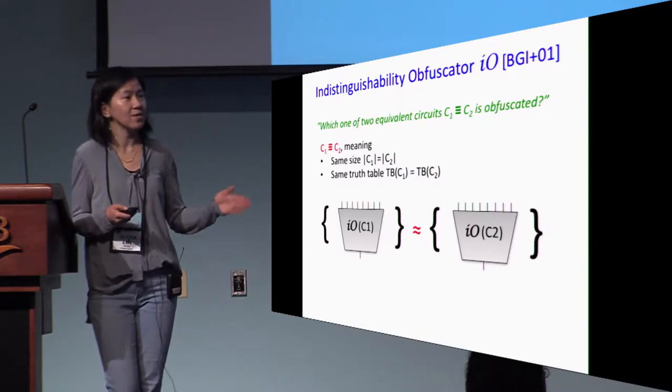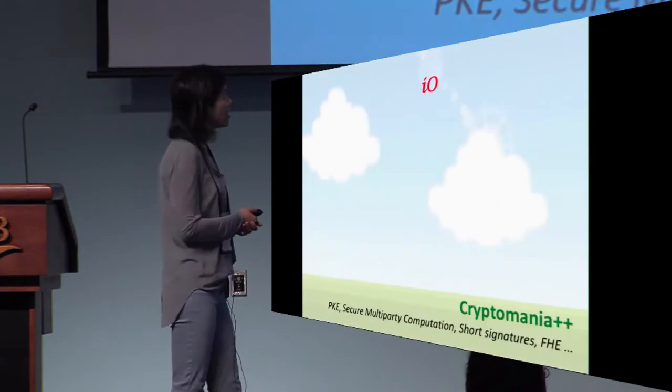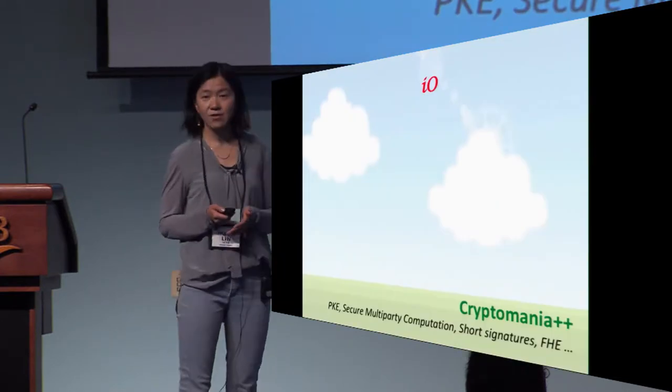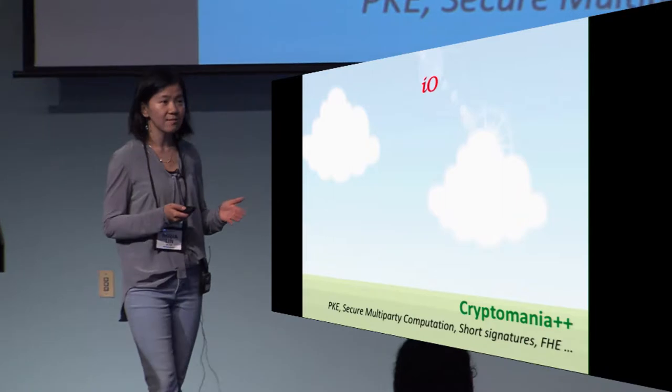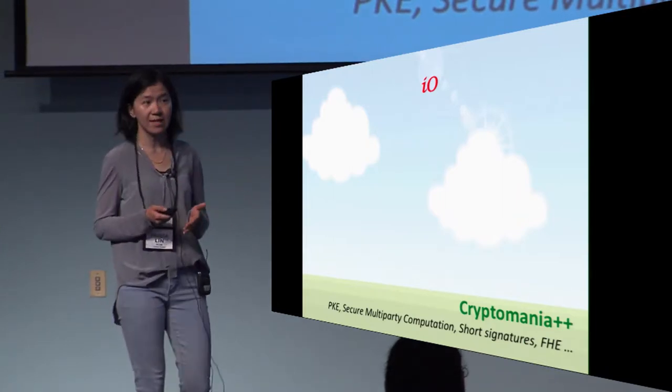Even though this notion really hides only one bit of information, it turns out to be extremely powerful. A long line of work has shown that IO, with the addition of some mild assumption like one-way function, can already imply almost all of cryptomania and beyond.